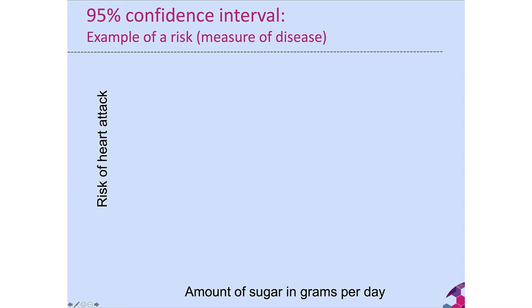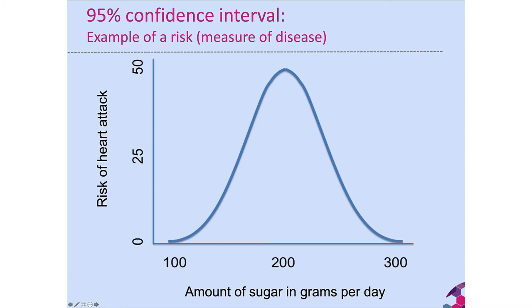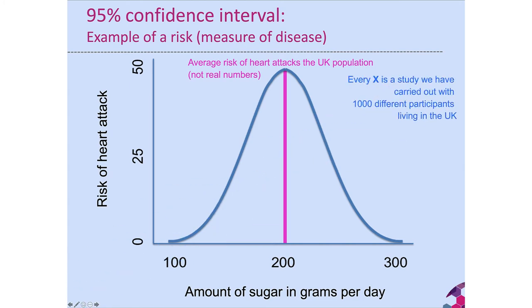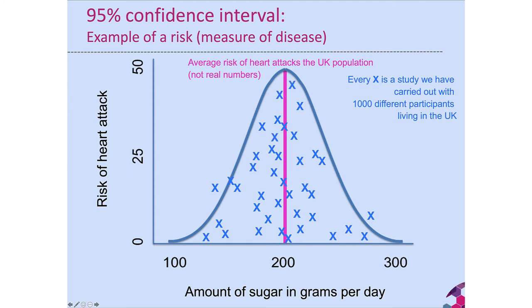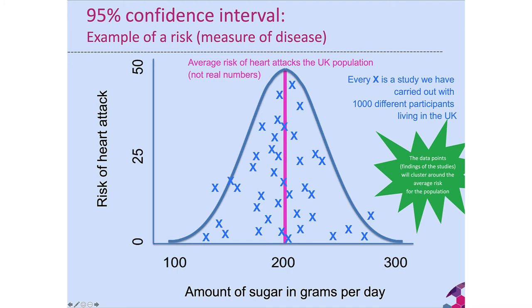We can do the same with an example of risk. Looking at risk of heart attack and amount of sugar in grams per day, we do a number of different studies with a thousand different participants. The findings cluster around the average risk in the population, and a 95% confidence interval tells us the range within which the true average risk of heart attacks in the UK population — if people eat a lot of sugar — will be found. Narrower confidence intervals are what we are looking for.